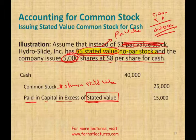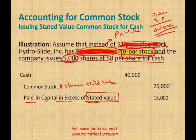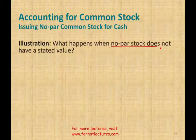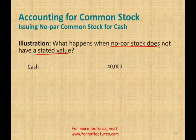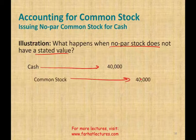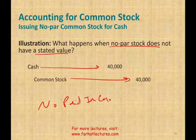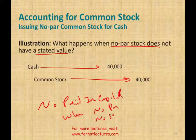We also have no-par stock, meaning it has neither a par value nor a stated value. If no-par stock is issued — for example, 5,000 shares at $8 — the company receives $40,000 cash. Since there is no par or stated value, we credit common stock for the full $40,000. There is no paid-in capital in excess of par when there is no par and no stated value.